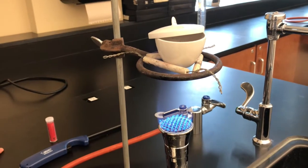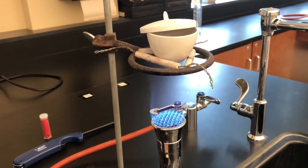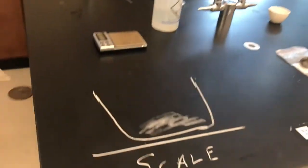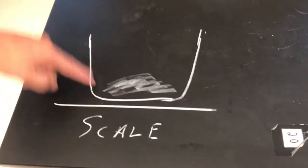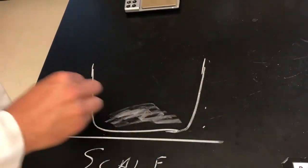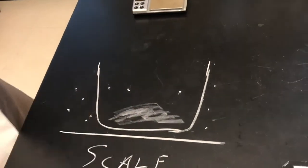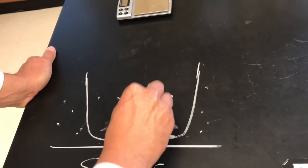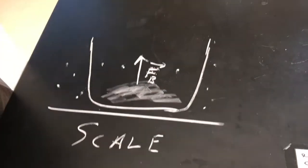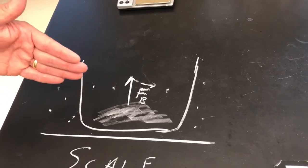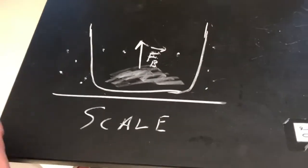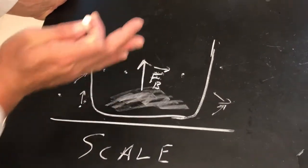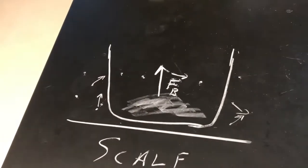Now we're going to mass it again — the crucible, lid, and the magnesium oxide. But it's really important to understand that you can't mass hot things. Imagine putting something really hot on a scale. This hot crucible is going to heat up the air molecules, and hot air rises, so it's going to produce a buoyant force. A really hot crucible weighs less than it really does. That's why it's important to let things cool — plus it's probably not good for the scale. All those air molecules gain lots of kinetic energy and actually lift the crucible up a little bit.